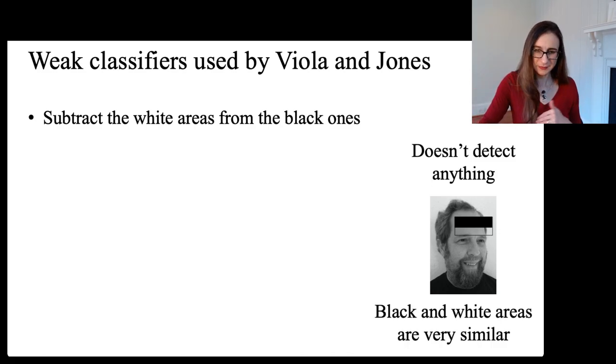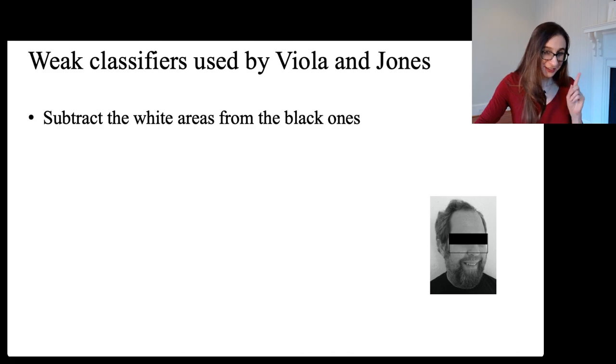Here, they're both dark. And so again, the difference between the black area and the white area is zero. But here, this is where we are detecting something because you can see where his eyes were, this is all dark. And then just below his eyes is lighter. And so that's our weak classifier for detecting his eyes.